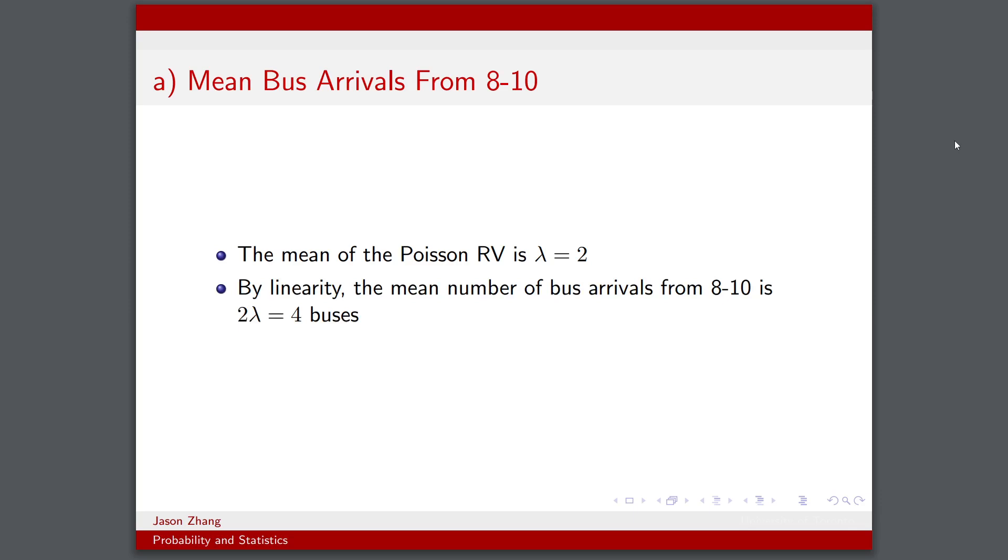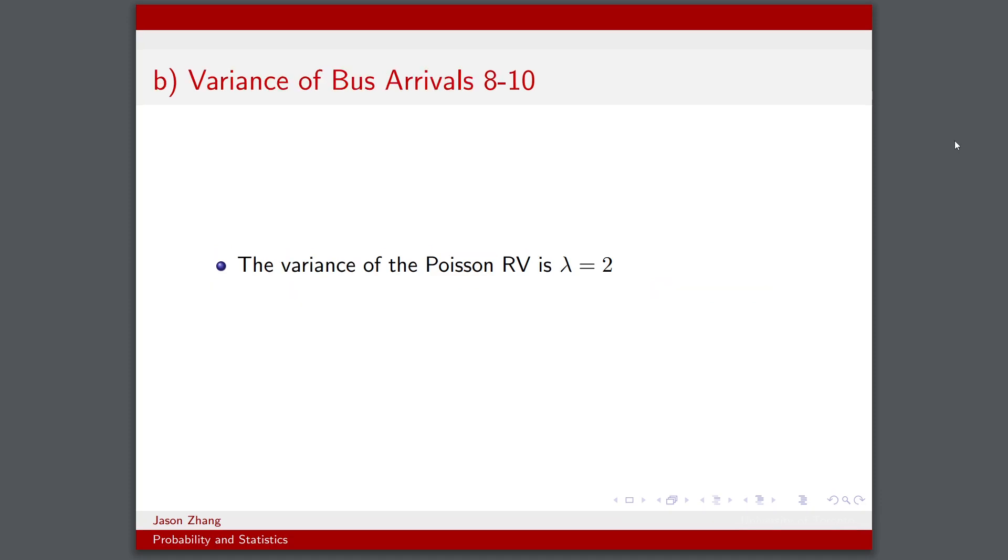And we know that the mean is linear. So if we consider the interval between 8 and 9am and then 9 and 10am, we can essentially just add up the means. Therefore the mean number of bus arrivals from 8 to 10am will be 2λ, which would be 4 buses. So that's quite simple.